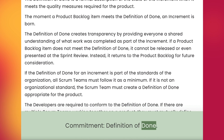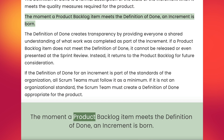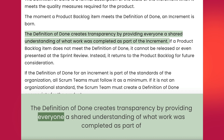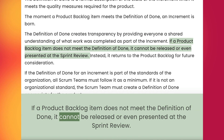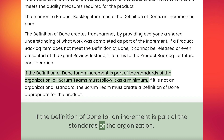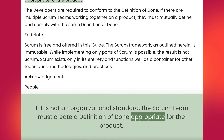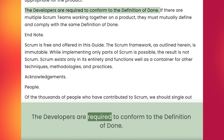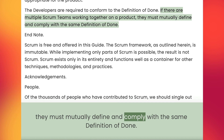Commitment: Definition of Done. The definition of done is a formal description of the state of the increment when it meets the quality measures required for the product. The moment a product backlog item meets the definition of done, an increment is born. The definition of done creates transparency by providing everyone a shared understanding of what work was completed as part of the increment. If a product backlog item does not meet the definition of done, it cannot be released or even presented at the sprint review; instead it returns to the product backlog for future consideration. If the definition of done for an increment is part of the standards of the organization, all Scrum teams must follow it as a minimum. If it is not an organizational standard, the Scrum team must create a definition of done appropriate for the product. The developers are required to conform to the definition of done. If there are multiple Scrum teams working together on a product, they must mutually define and comply with the same definition of done.